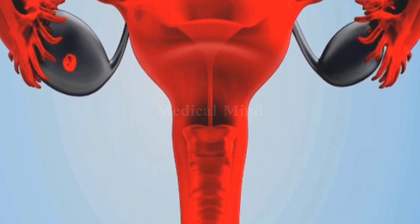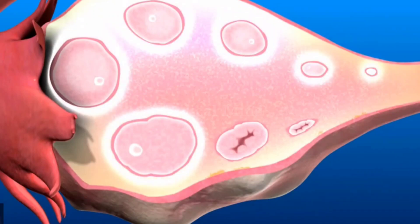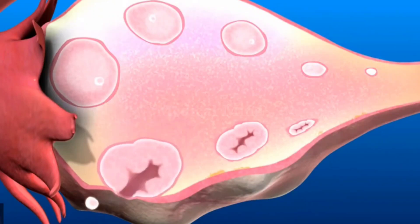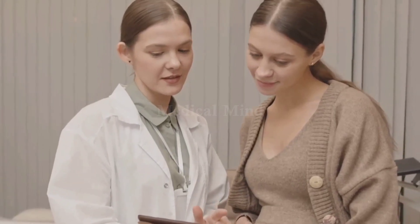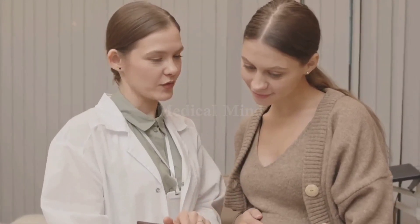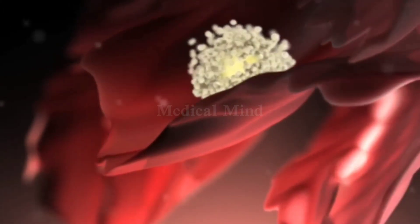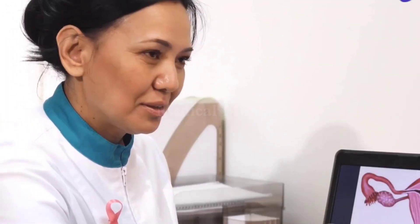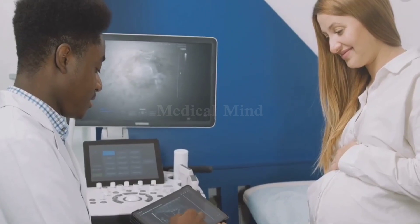Ovarian cysts are fluid-filled sacs that form on or inside the ovaries — think of them as small blisters. They're very common and most women will have at least one in their lifetime, often without even knowing it. Most cysts are harmless, cause no symptoms, and disappear on their own. Your ovaries, two almond-shaped organs, release eggs each month as part of the menstrual cycle. Sometimes during this process a cyst can form, usually as a normal part of how your body works.